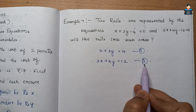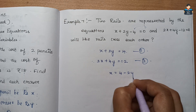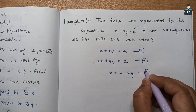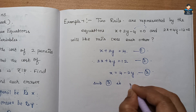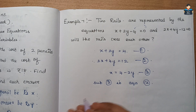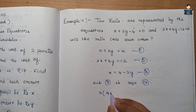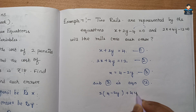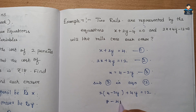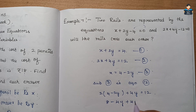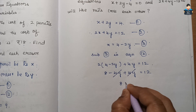Equation 1 is simpler, so x equals 4 minus 2y. This is Equation 3. We substitute Equation 3 into Equation 2: 2 into (4 minus 2y) plus 4y equals 12. Multiplying gives 8 minus 4y plus 4y equals 12. The terms minus 4y and plus 4y cancel, giving 8 equals 12.